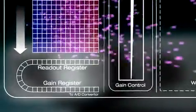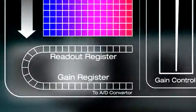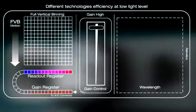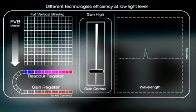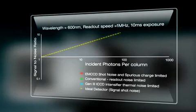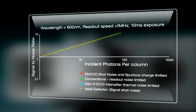For EMCCDs, electronic signals are shifted through an additional gain register, where single photon events can be amplified well above readout noise by impact ionization of up to 1000 times. By doing so, EMCCDs overcome this noise source completely, thus dramatically improving the detection contrast of weak signals.